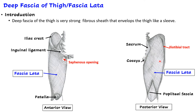On the posterior aspect it can be seen that the fascia lata becomes continuous with the popliteal fascia — the fascia present in the popliteal fossa, a diamond-shaped hollow or depression just behind the knee joint.